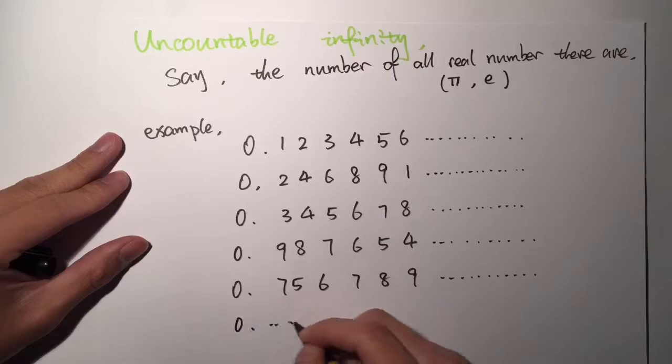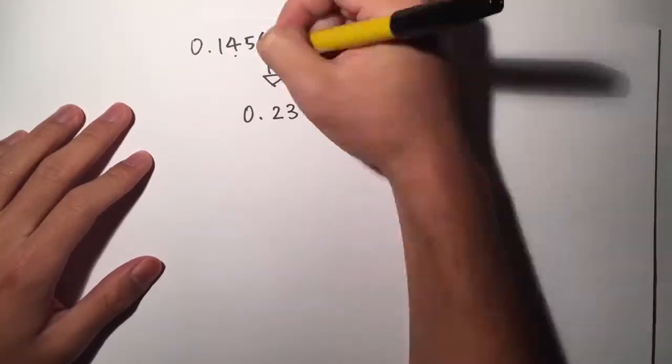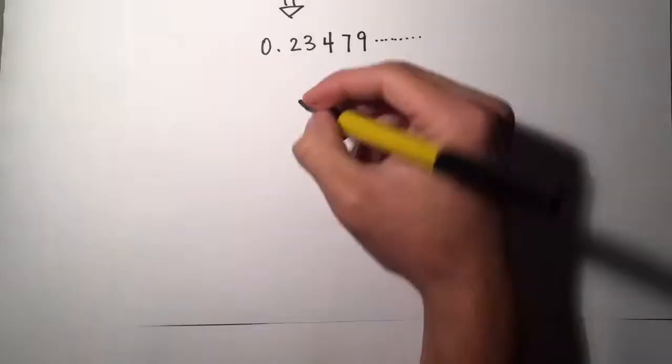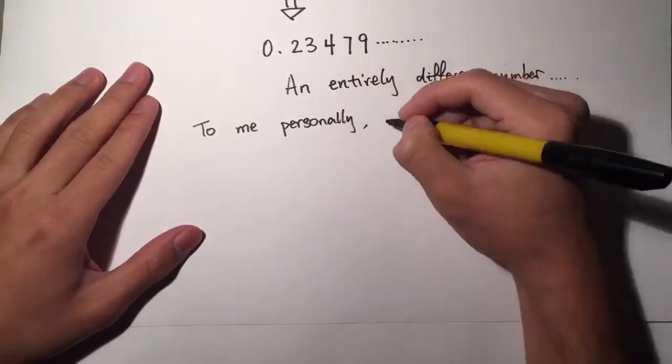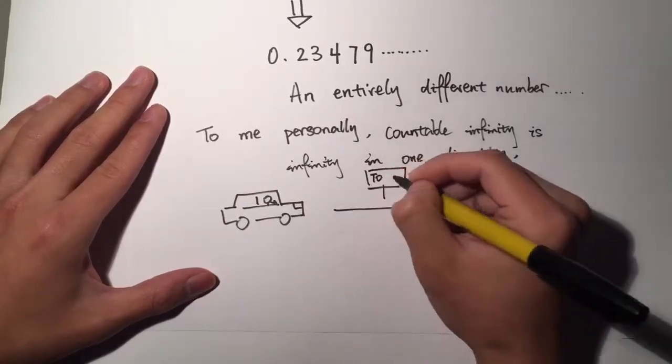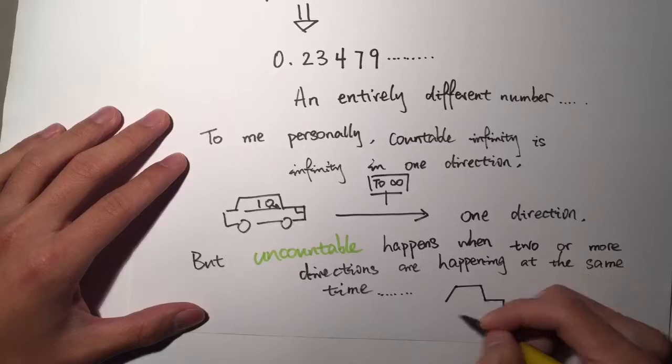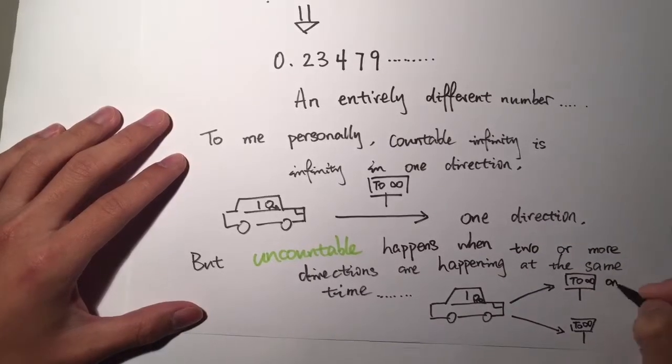For example, if you have a couple of different decimals and you choose the first digit from the first number, second digit from the second number, etc., and change every single digit to a different number, then you create an entirely different number because the first digit is different from the first digit in the first number, and so on.